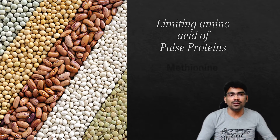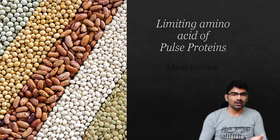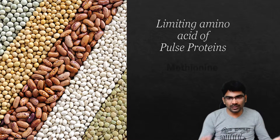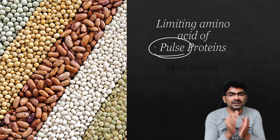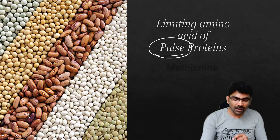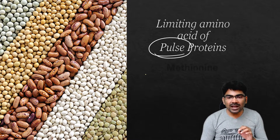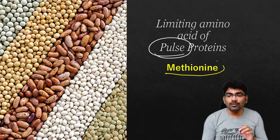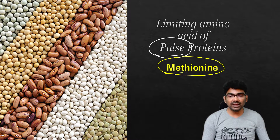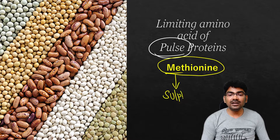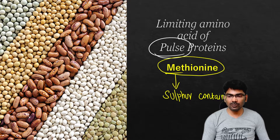Pulses include various dals such as moong dal, urad dal, arhar dal — there are a lot of dals. These dals come under the category of pulses. Pulses lack methionine. Methionine is a sulfur-containing amino acid.